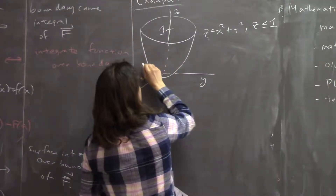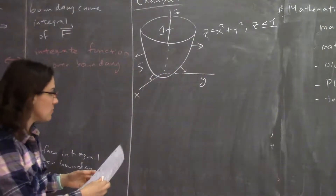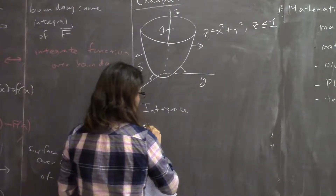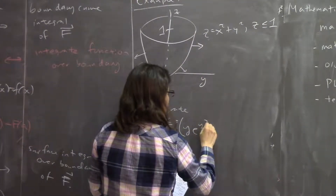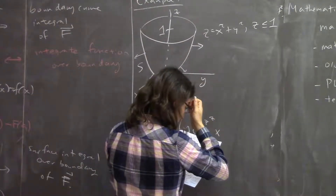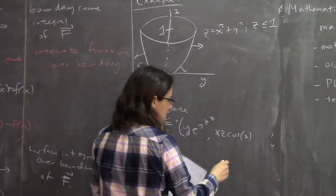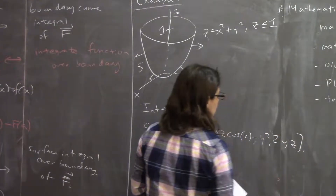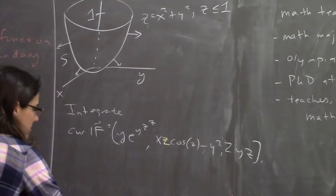Suppose we want to integrate the curl of F, which is some crazy vector field: (ye^(yz), xz·cos(sin z), 2yz). We want to compute the integral over S of curl F · dS for this outward-oriented paraboloid. One question you might ask is: you're giving me this thing and saying it's the curl of F — how do you know there is such an F whose curl is this? We'll come back to that.